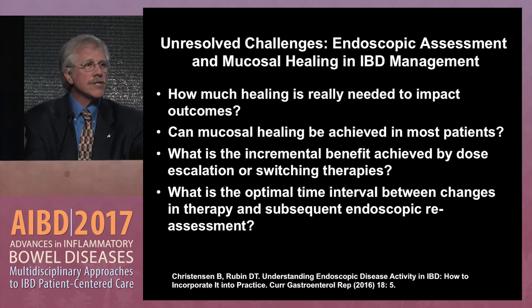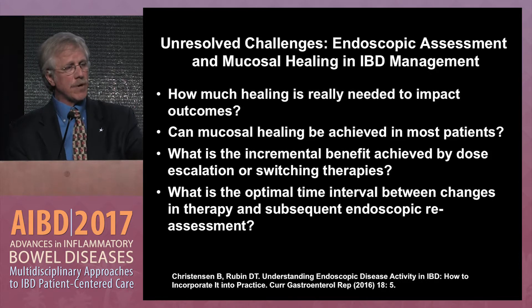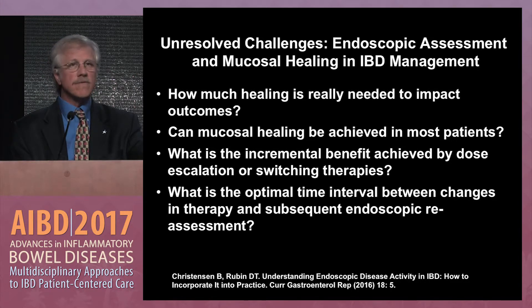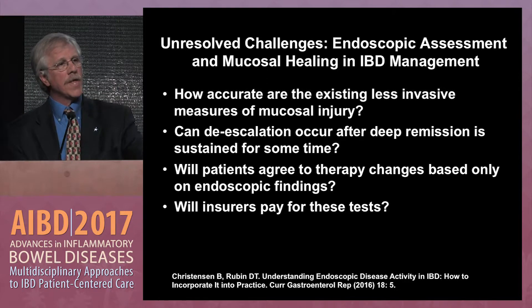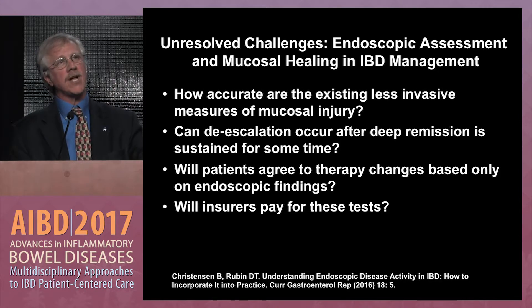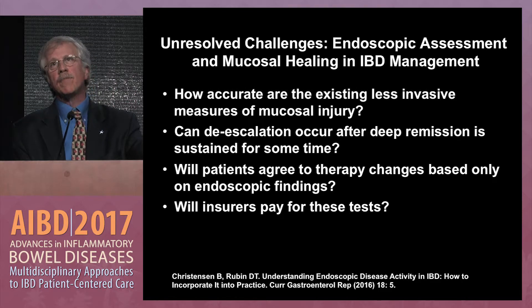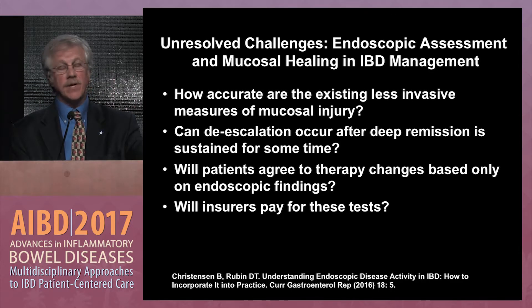There are a number of unresolved challenges outlined by David Rubin in Current Gastroenterology Reports. How much healing is really necessary to impact outcomes? Can mucosal healing be achieved in most individuals? What's the benefit of escalation of various agents? What's the right time interval — three months or six months — between making a decision to move to a different therapy? How accurate are the existing less invasive measures of mucosal injury? Can we de-escalate in patients who achieve complete resolution of inflammation? Will patients who feel well be willing to advance their therapy when shown endoscopic images of ongoing inflammation? Will insurers pay for these tests?